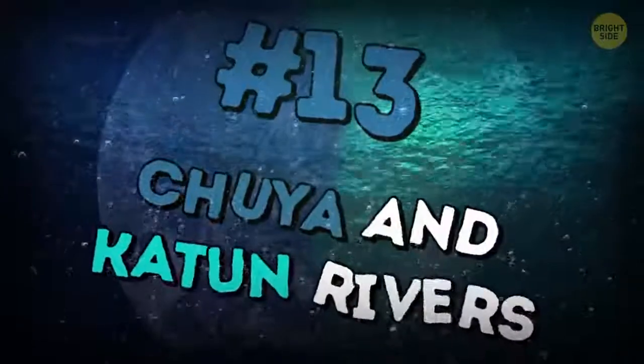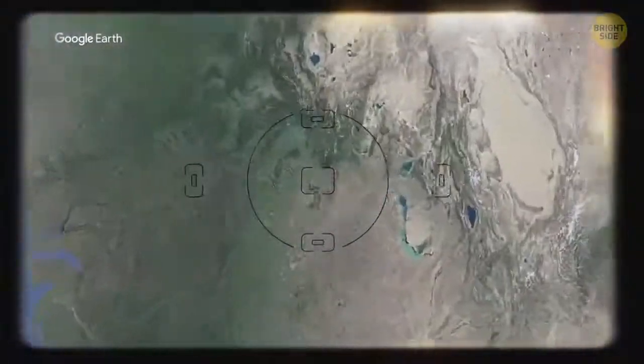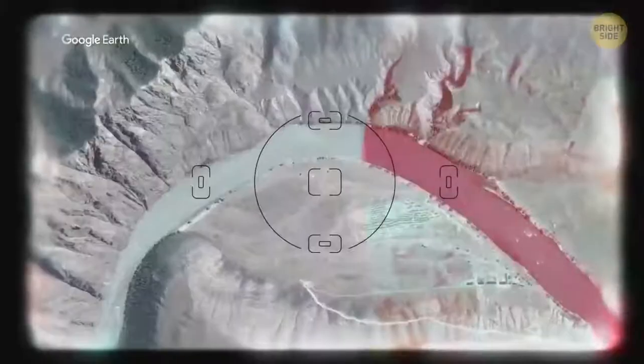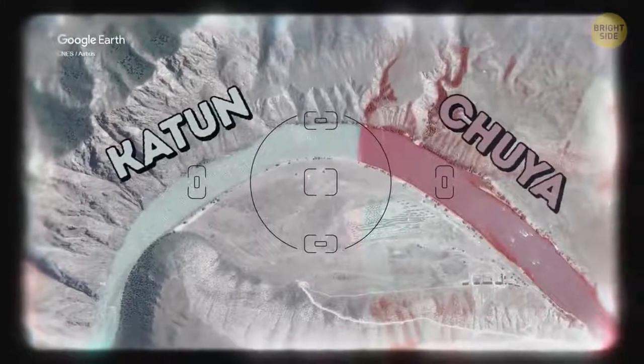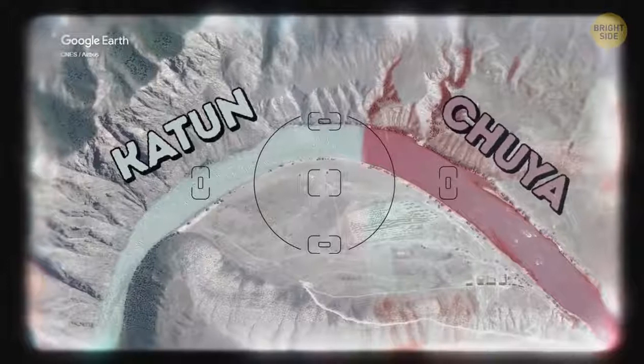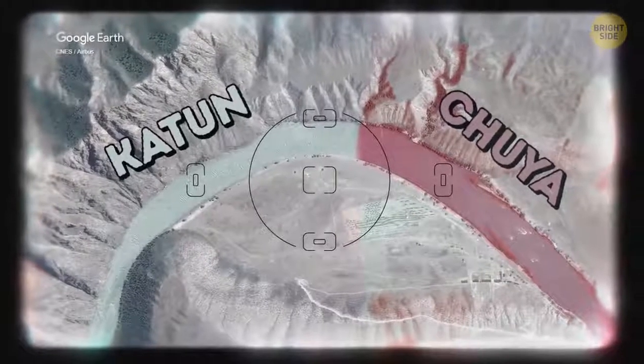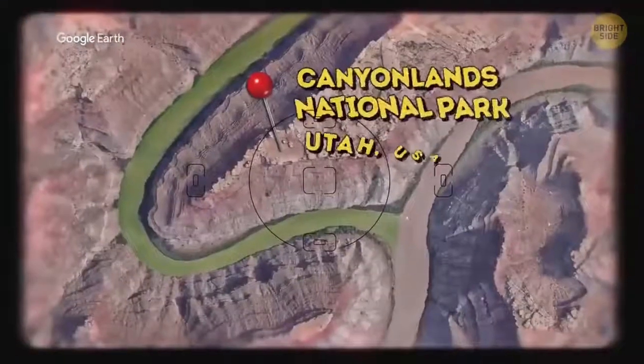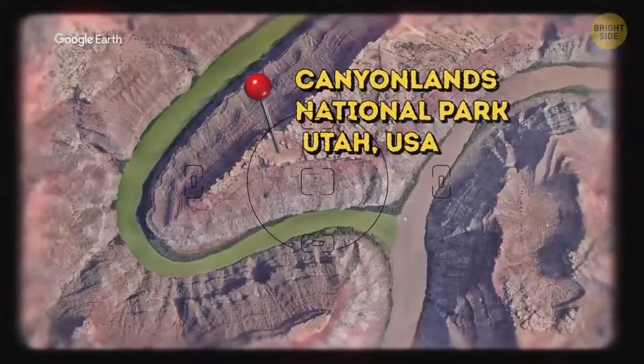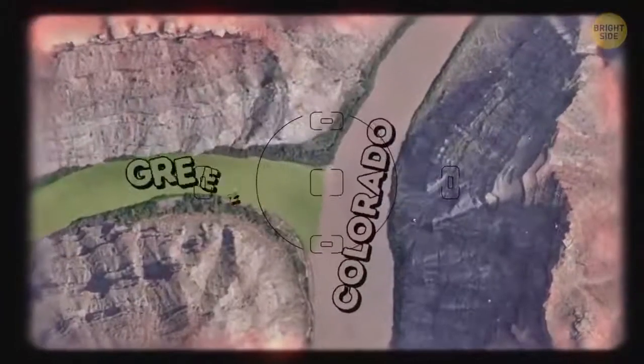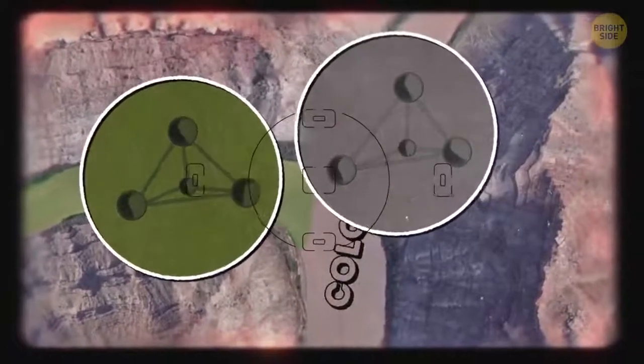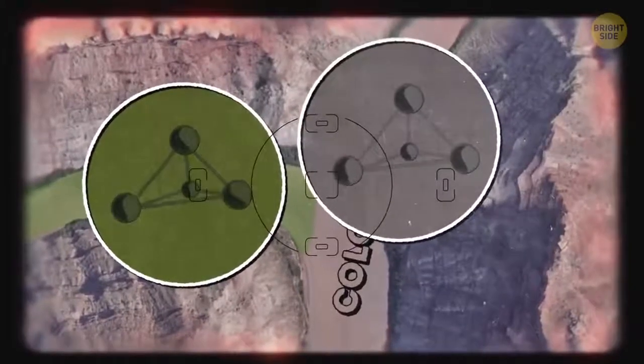13. Chuya and Katun rivers meet in the Altai Republic, Russia. The water of the Chuya has an unusual cloudy white color here and looks dense and thick. Katun is clean and turquoise. Flowing into each other, they form a single, two-colored flow that does not mix for some time. 14. The Green and Colorado rivers. The place of their junction is Canyonlands National Park in Utah, USA. Colorado is brown and green is, yep, green. The colors of these rivers go through rocks with different chemical makeup. That's why they have such a big contrast of colors.